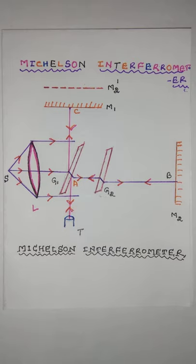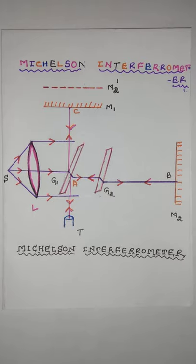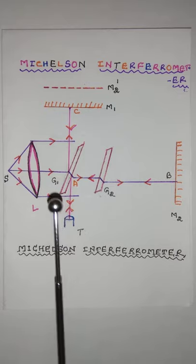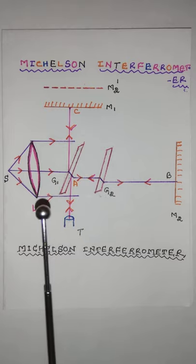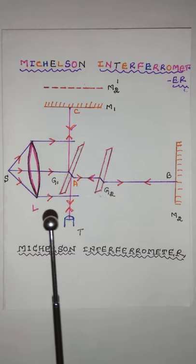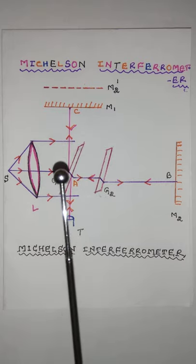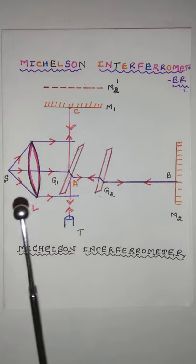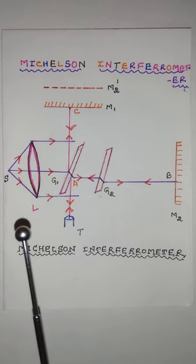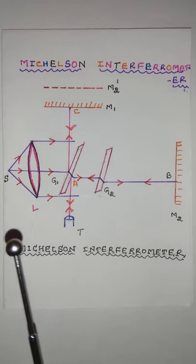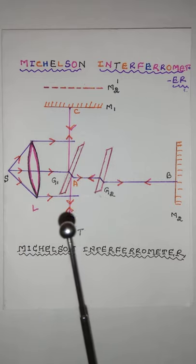Further, this transmitted ray AB falls normally on mirror M2 and is reflected back along the same path. After reflection at the back surface of G1, it moves along AT. The two emergent beams have been derived from a single incident beam and therefore they are coherent, thereby producing interference.